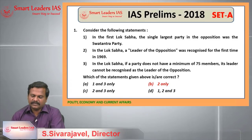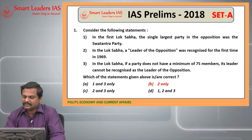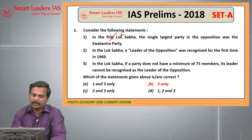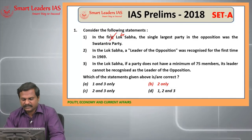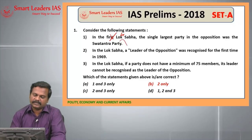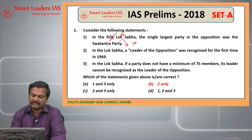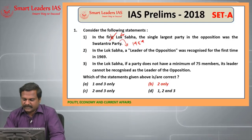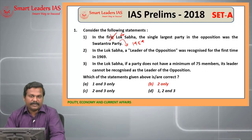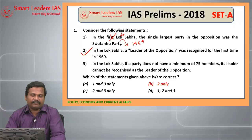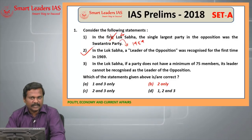The first question: in the first Lok Sabha, the single largest party in the opposition was the Swatantra party. This is the wrong statement. In the fourth Lok Sabha, the single largest party in the opposition was the Swatantra party. Swatantra party was formed by Dr. Rajaji in 1959. In Lok Sabha, a leader of opposition was recognized for the first time in 1969 — this is the right statement.